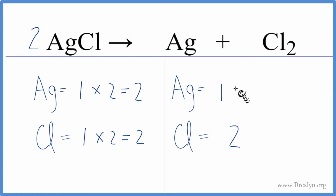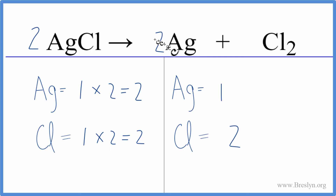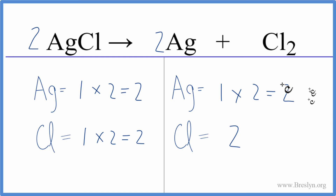And then to balance the silver, it's pretty straightforward. We put a two as our coefficient in front of the silver. One times two gives us two. And now everything is the same on both sides of the equation — it's balanced.